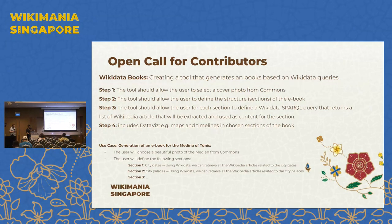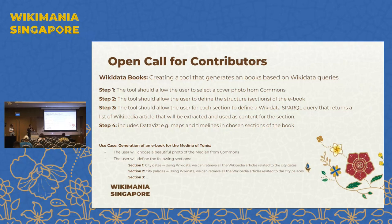The second idea is called Wikidata Books — using Wikidata to generate e-books online. The steps are: first, choose a cover photo from Commons; second, define the structure of the e-book; then for chapter one, input a SPARQL query that retrieves a list of Wikipedia articles, compiles them, and composes the first chapter. For the second chapter, another query from Wikidata returns a list of articles and creates that chapter. You can also generate data visualizations — maps, timelines — to include in the book.